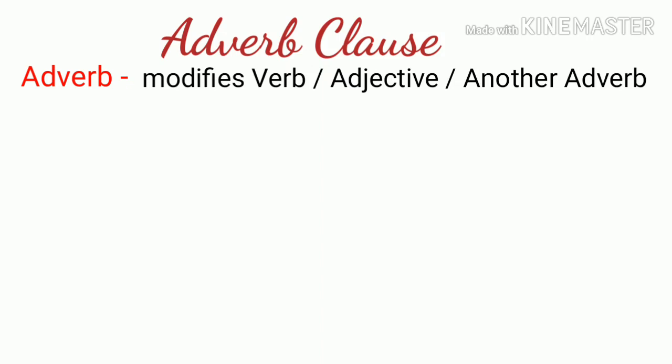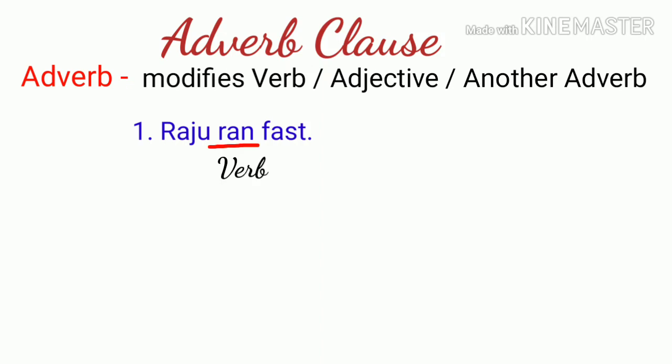An adverb gives information about the verb. For example, 'Raju ran fast' - in Marathi, 'Raju vegane dhawla.' Here 'dhawla' means 'ran' - that is the verb. 'Vegane' (fast) gives information about how he ran, so it is an adverb.